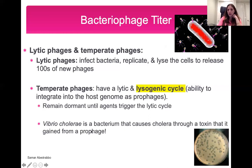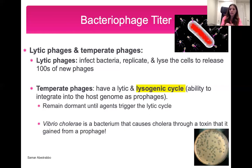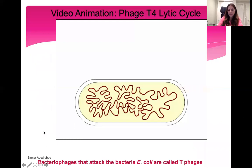Vibrio cholerae is a bacterium that causes cholera, a really severe diarrheal infection. The reason people get diarrhea is that Vibrio cholerae releases a bad toxin, and where it got this toxin from is interesting: a long time ago Vibrio cholerae was infected with a phage in the lysogenic cycle, which injected its genetic material into Vibrio cholerae's genome. The phage's genetic material actually coded for a toxin, so the phage changed the bacteria and made it more pathogenic — more able to cause disease.